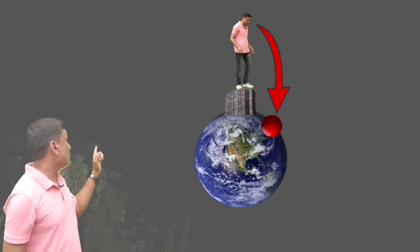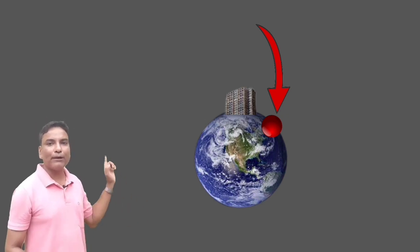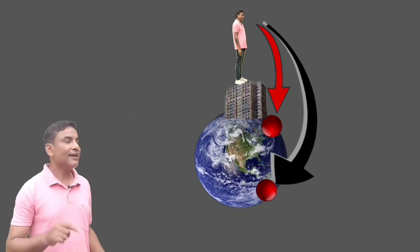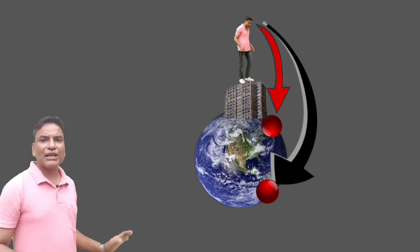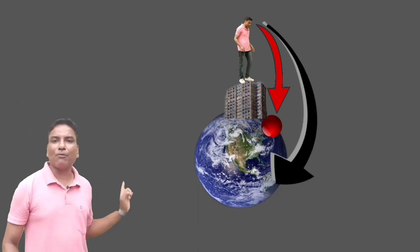Then the ball falls like this on the surface of the Earth. If I throw harder, then the ball will fall like this, and this time, it will take more curved path, because Earth's gravity always pulls the ball into the center of the Earth.